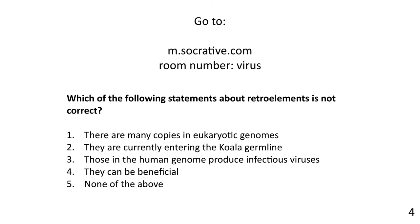Final quiz: Which of the following statements about retro elements is NOT correct? (A) There are many copies in eukaryotic genomes. (B) They are currently entering the koala germline. (C) Those in the human genome produce infectious viruses. (D) They can be beneficial. (E) None of the above. C is wrong—those in the human genome do NOT produce infectious viruses. The example shown was where someone took the DNA, fixed it, and put it in cell culture. Everything else is correct.